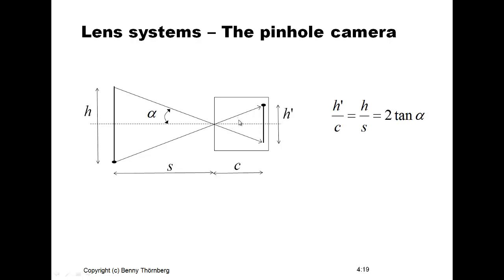The focus of the imaged object depends on the size of the tiny hole — it is important to keep the hole small. We have a mathematical formula for this projection based on the fact that angle alpha is the same on both sides of the hole. We express this as: tangent of alpha equals h-prime divided by c, equal to h divided by s. This gives us a relation describing how large the projection of an object will be at different distances inside the camera.